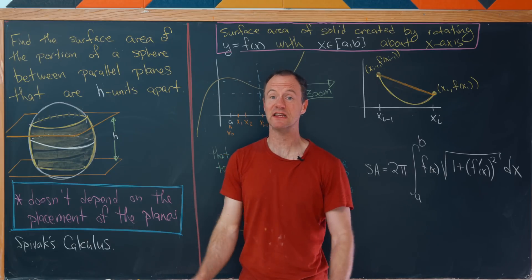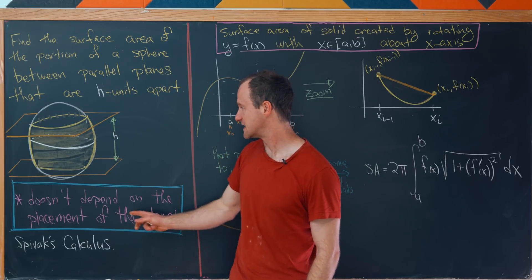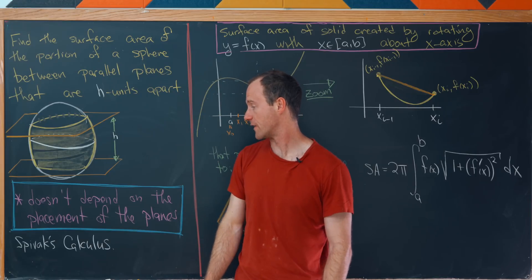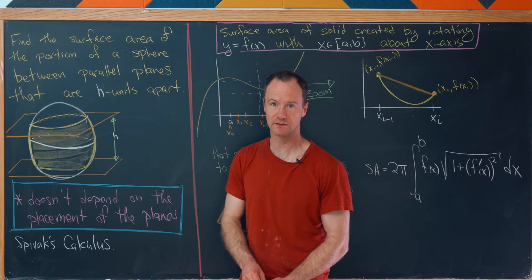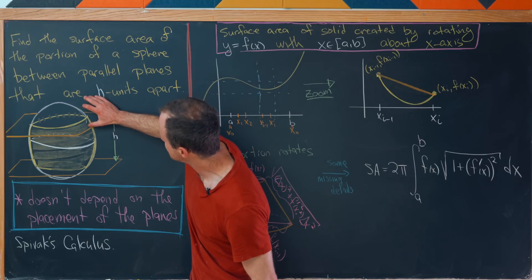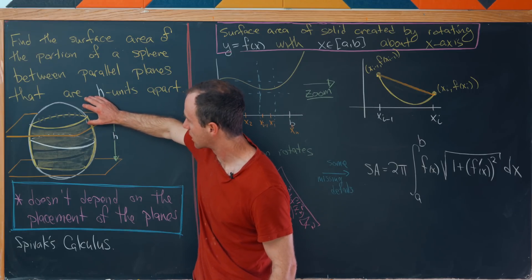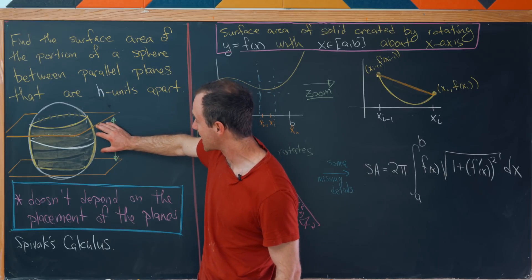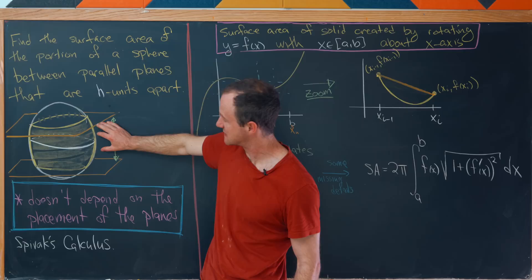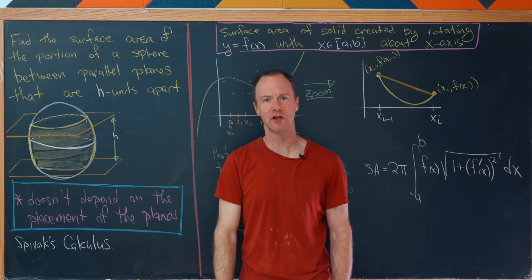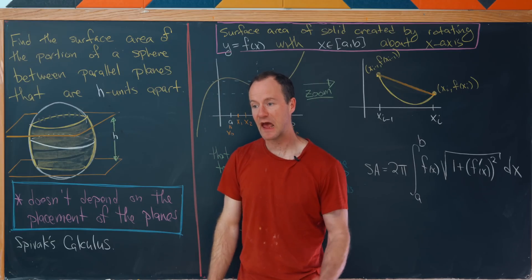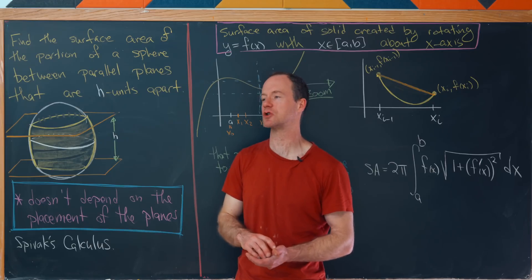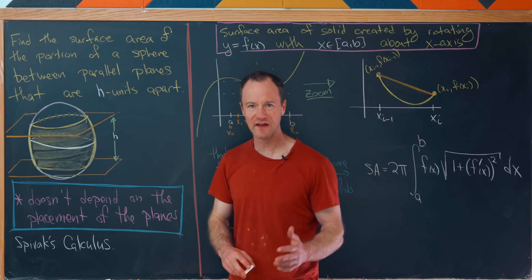Maybe the interesting thing about this problem is that this surface area does not depend on the placement of the planes. So if we put two planes apart way up here, we get a shape which is almost like a cap. But if we put the same two planes with the same distance down here, it looks closer to a cylinder. And that surface area will be the same even though those shapes are totally different. So I find that interesting.